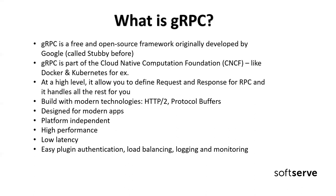gRPC was originally built at Google. The first version was called Stubby, and it was the solution in Google for almost a decade, connecting a lot of microservices running there with very good performance — like the backbone for every service in Google. In 2015, they decided to build the next version of Stubby, call it gRPC, and make it open-source. The main scenarios for using gRPC are efficiently connecting microservices, connecting mobile devices, browser clients and backend services, and generating efficient client libraries.